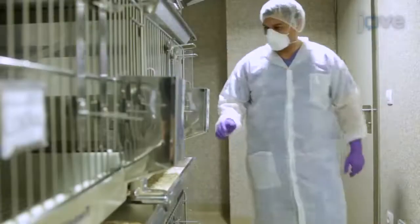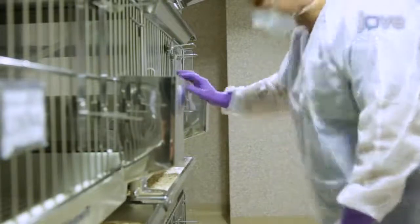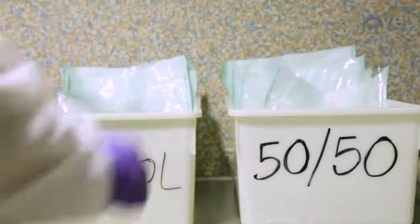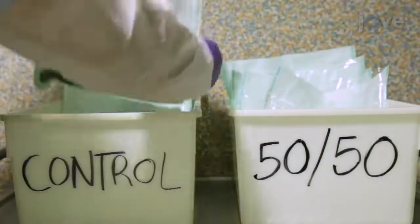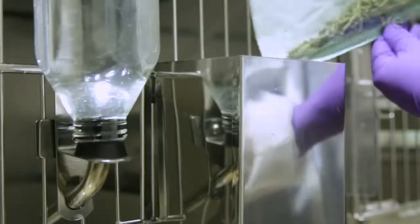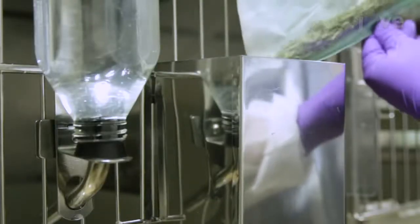To acclimate the animals to their diet, feed each animal in the control group 120 grams of control diet daily for four weeks and provide water ad libitum.